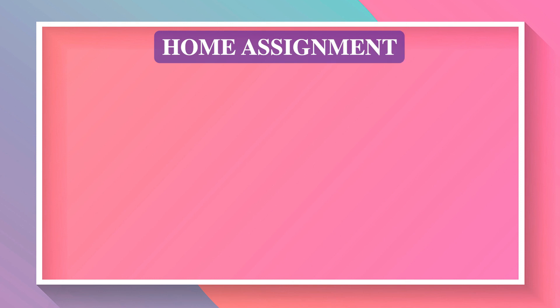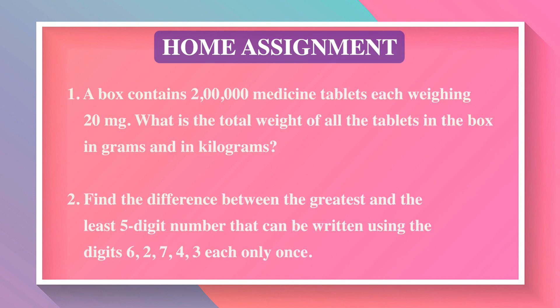Now here is the home assignment. Question 1: A box contains 2 lakh medicine tablets each weighing 20 milligrams. What is the total weight of all the tablets in the box in grams and in kilograms? Question 2: Find the difference between the greatest and the least 5-digit number that can be written using the digits 6, 2, 7, 4, 3 each only once. Thank you, hope you have understood. Bye-bye.